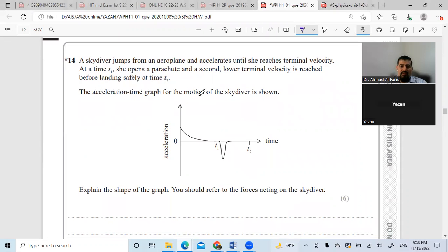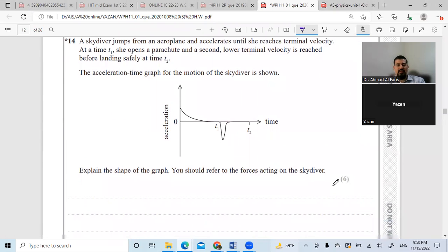The acceleration time graph of the motion is shown here. Explain the shape of the graph. You should refer to the forces acting on the skydiver, six marks.